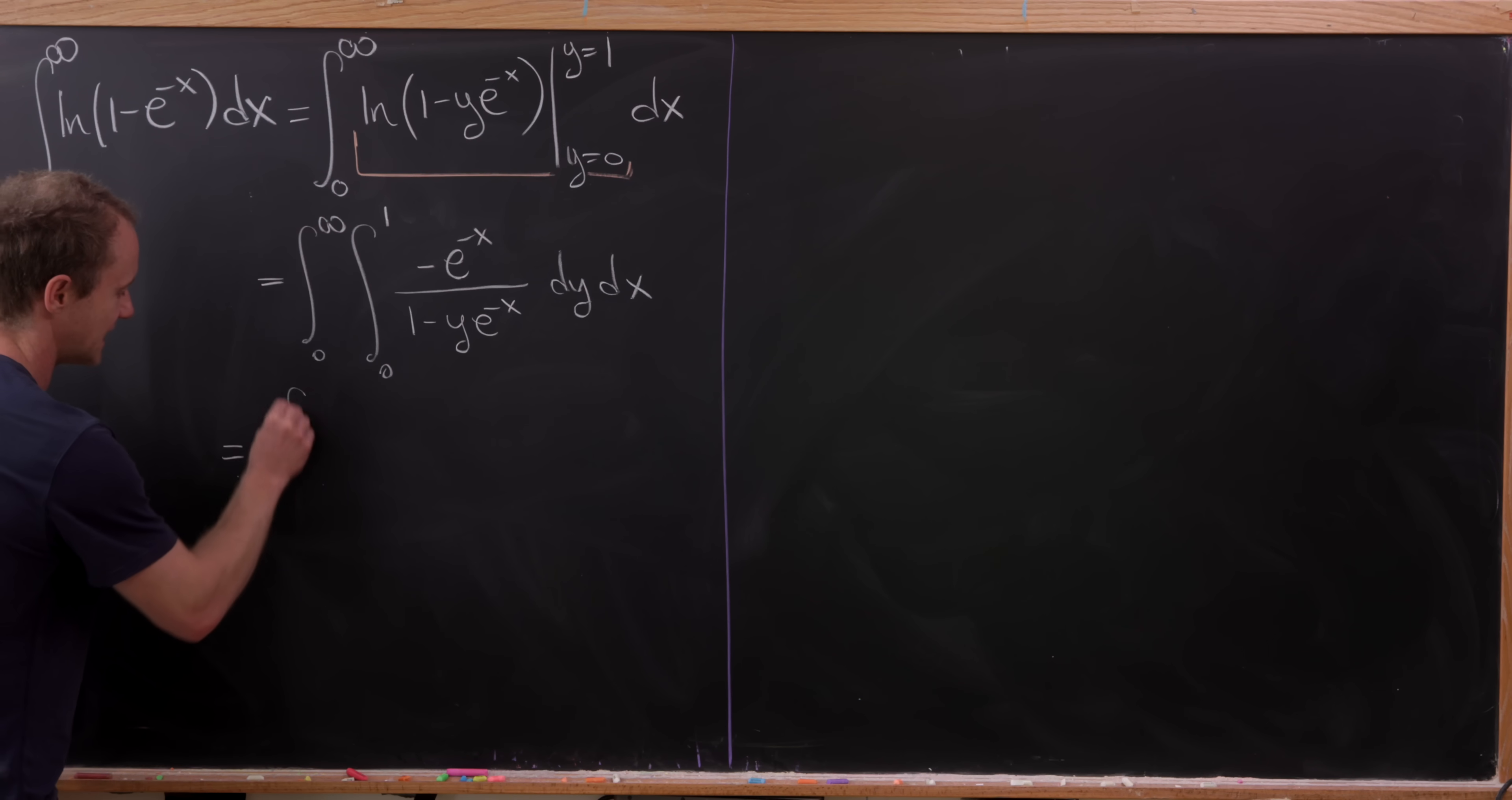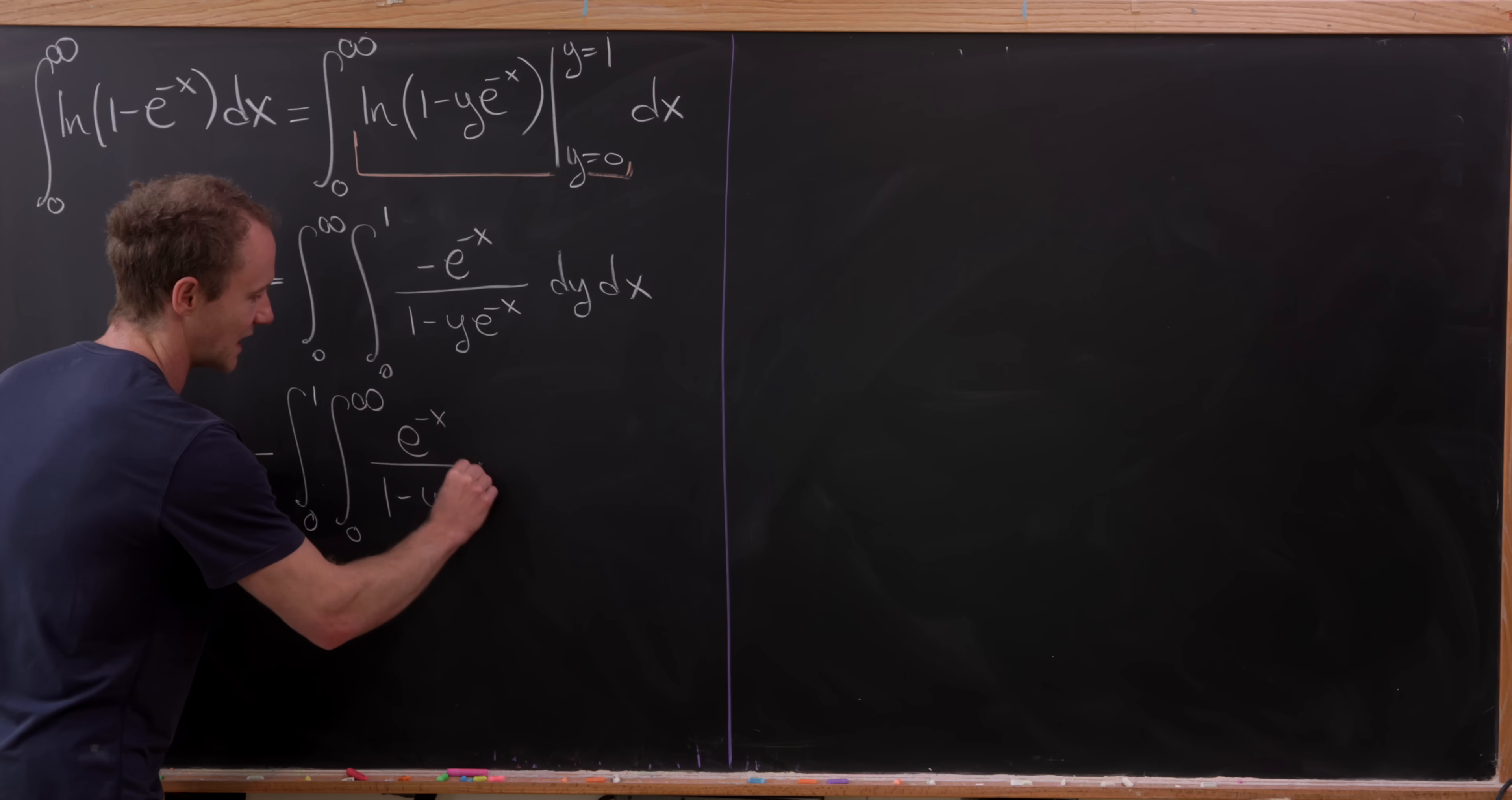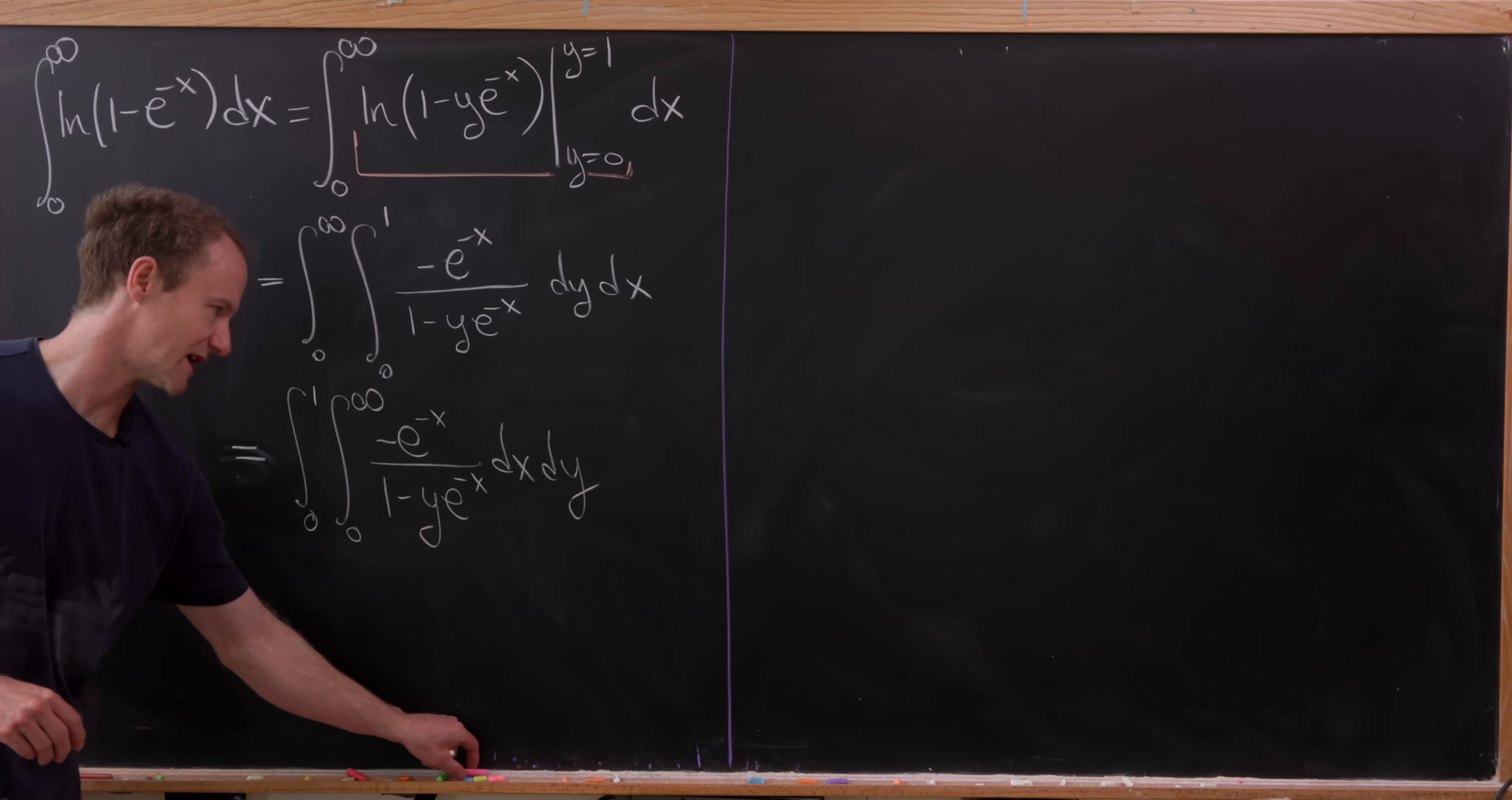I'm going to simultaneously bring a minus sign out front. So I've got minus the integral from zero to one, the integral from zero to infinity, and now I have e to the minus x over one minus y e to the minus x. Now it's dx dy. Actually, I'm not going to bring that minus sign out, I'm going to leave it inside, as we'll see with our next step, which is a nice substitution.